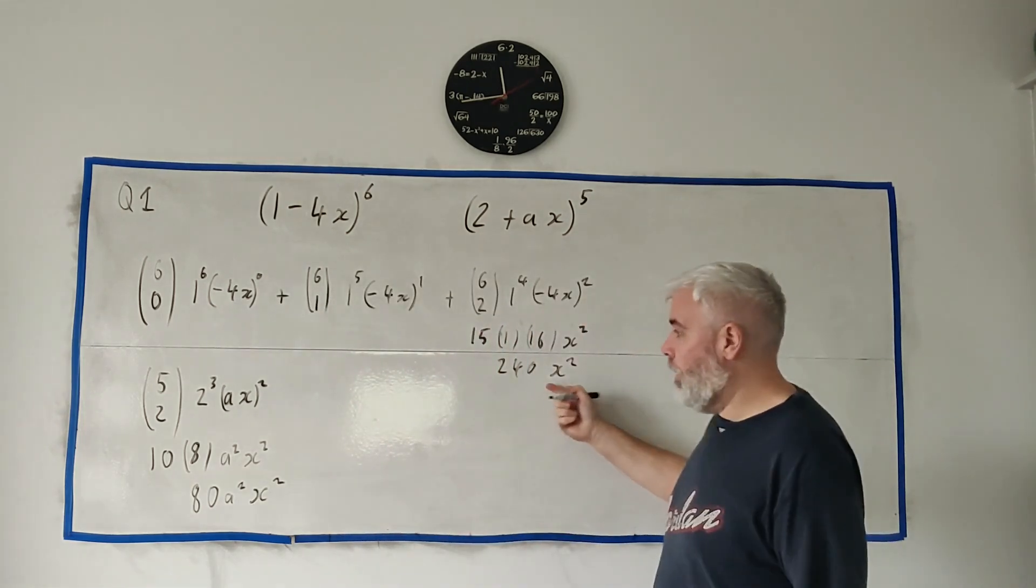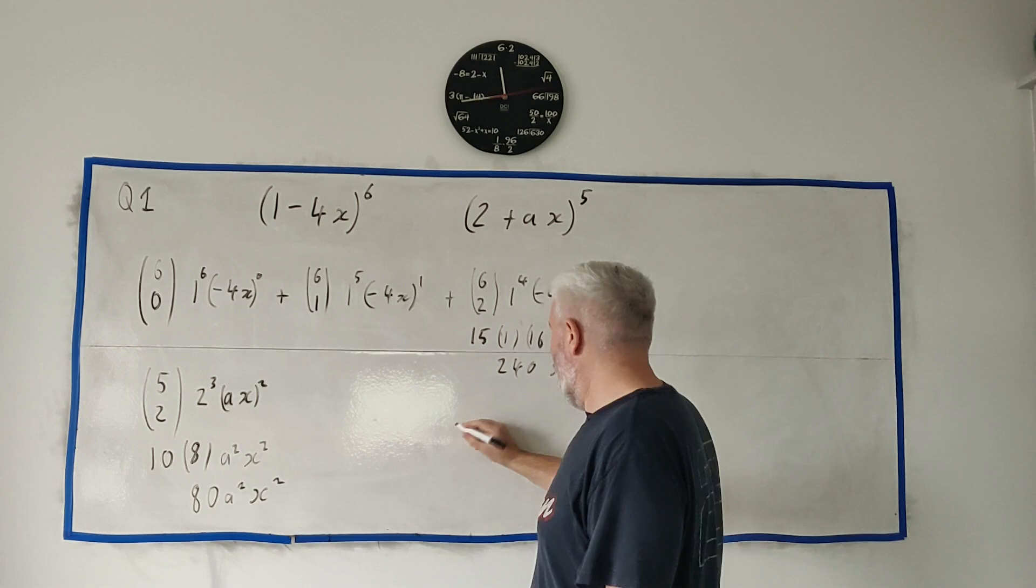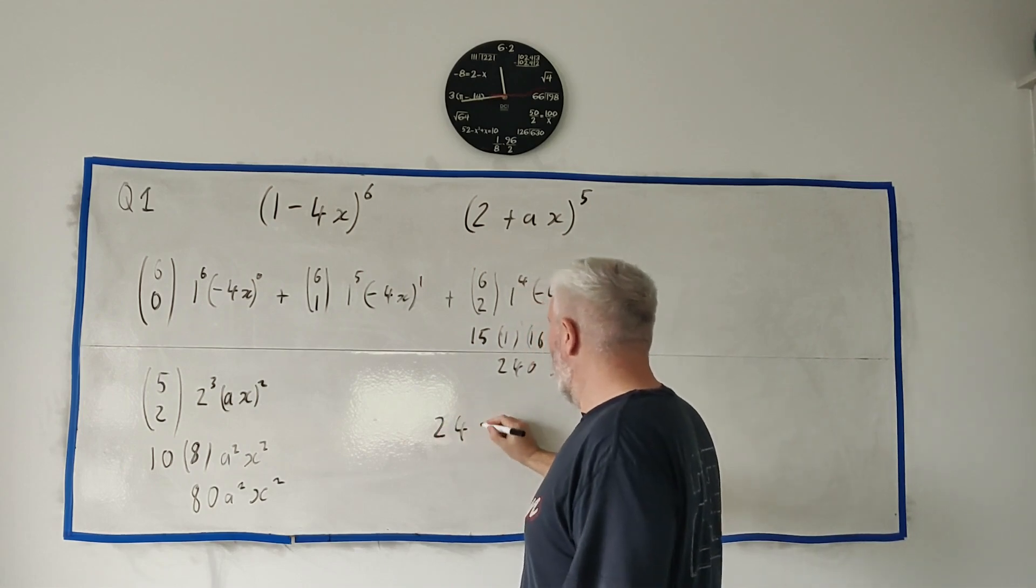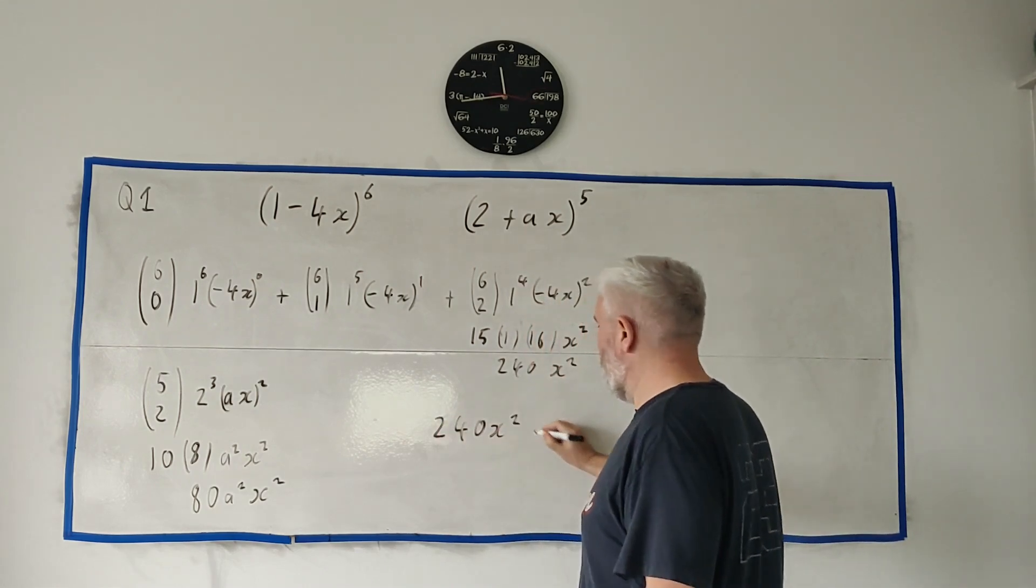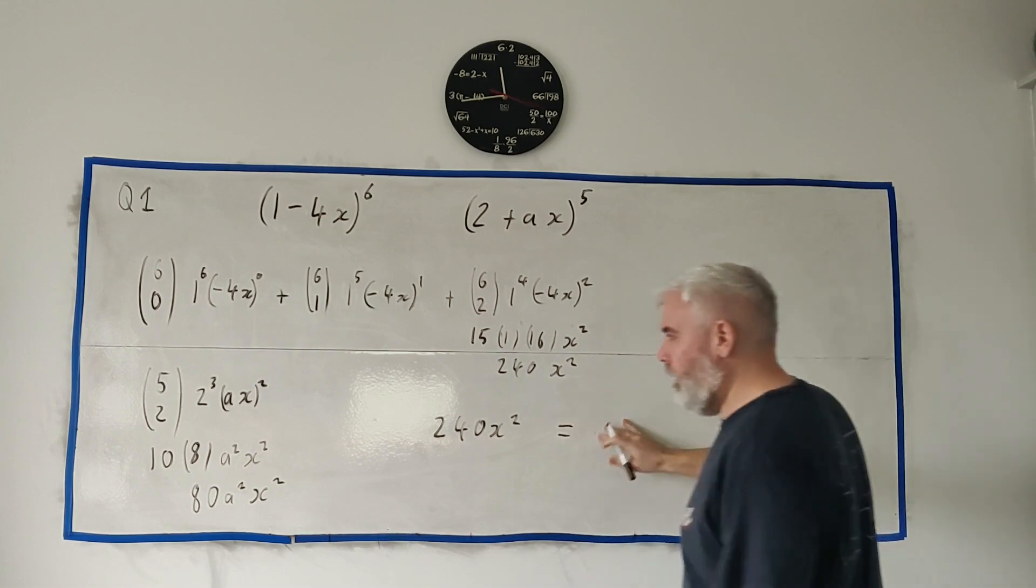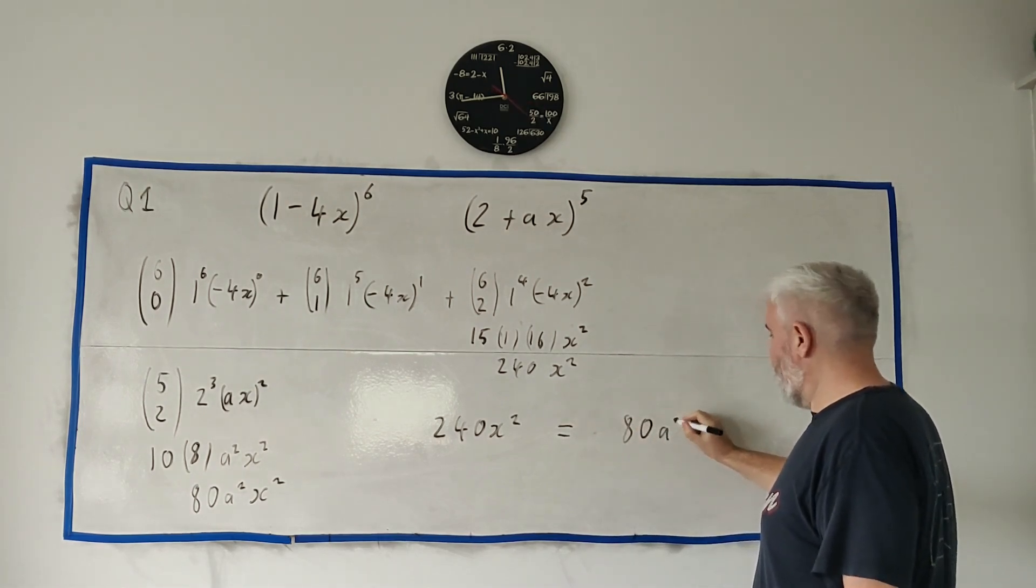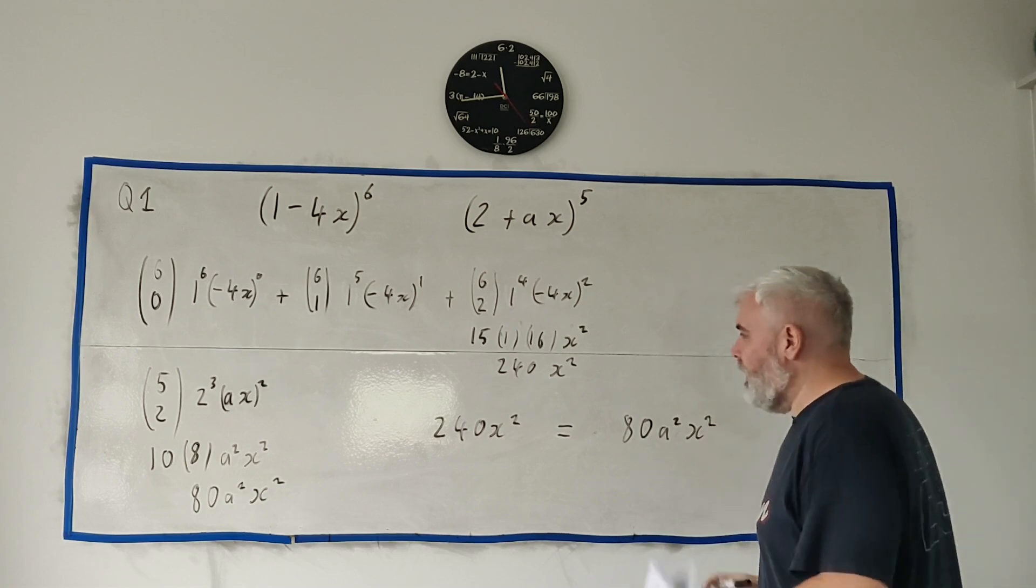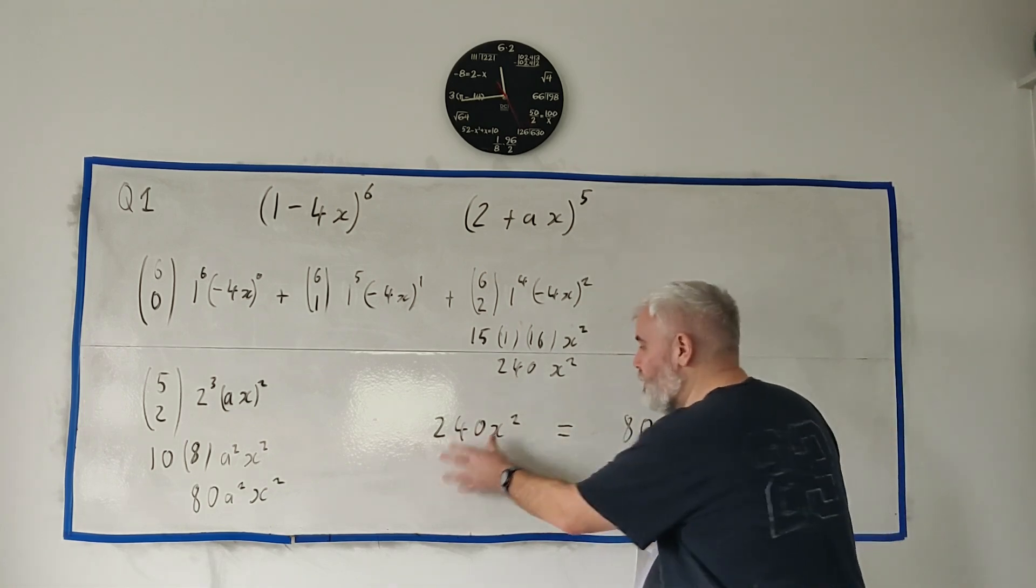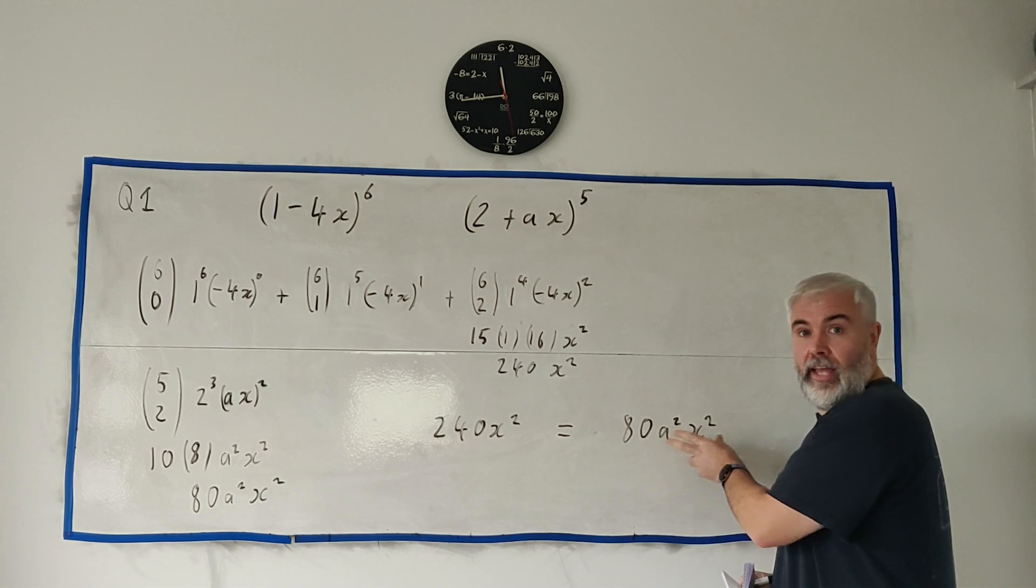So these are the two terms we have, and then we need to remember what they told us. And let me write the bottom again, 240x squared equals 80a²x². They told us that this term is 12 times this term.